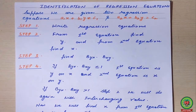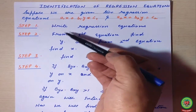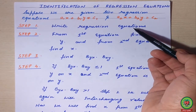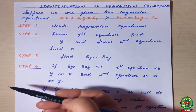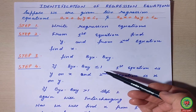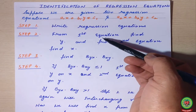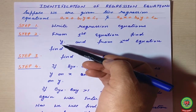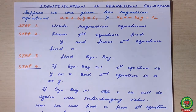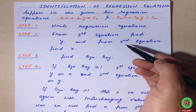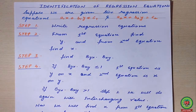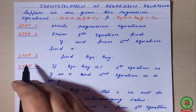We will follow three to four steps to make it easy. Step number one: we will write down the regression equations with a partition — one side we write one equation, the other side we write the other equation. Step number two: from the first equation we will find out the value of y, shifting all terms to the other side, and from the second equation we will take x on one side.